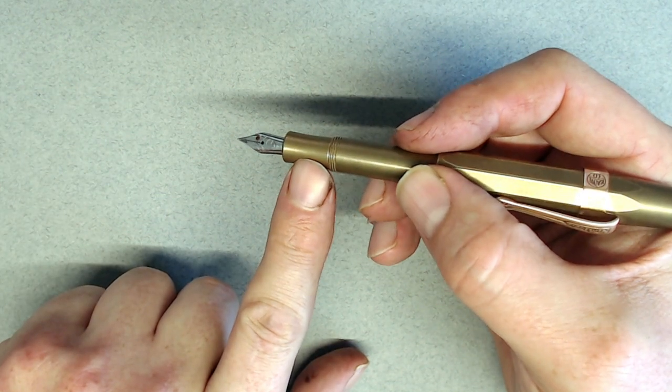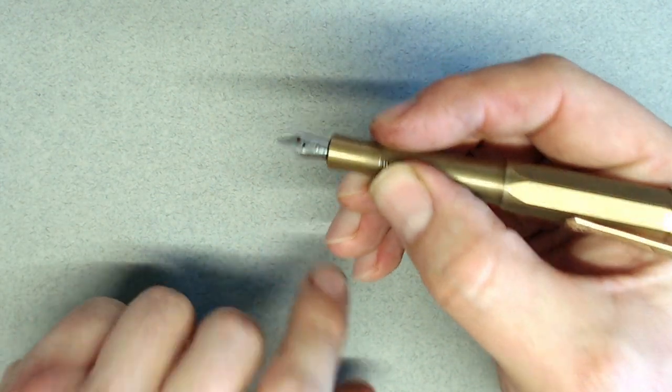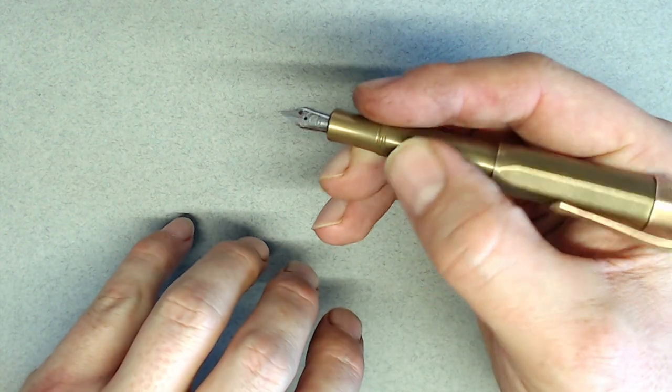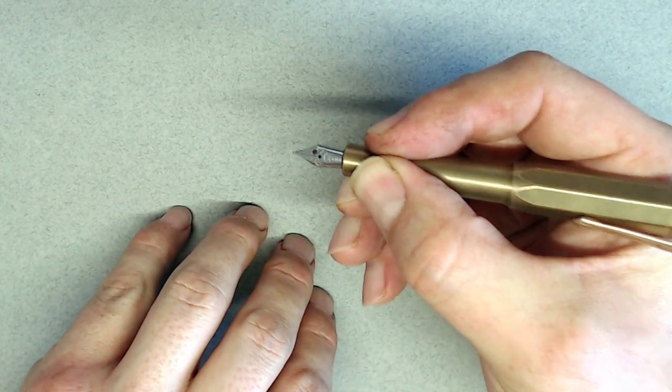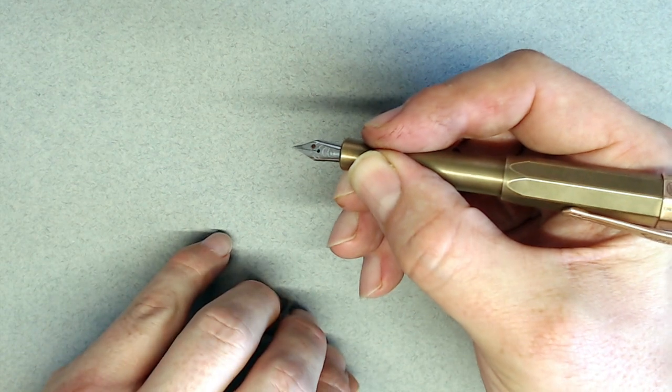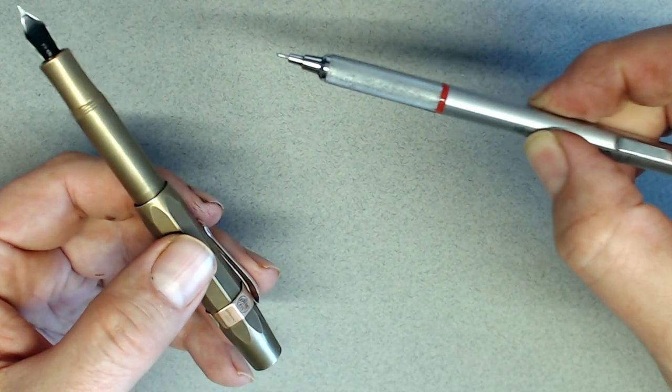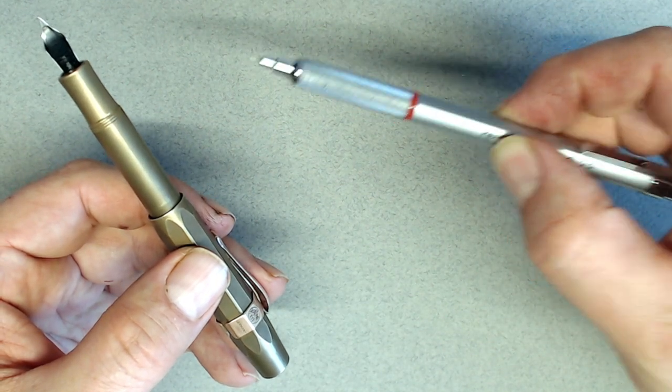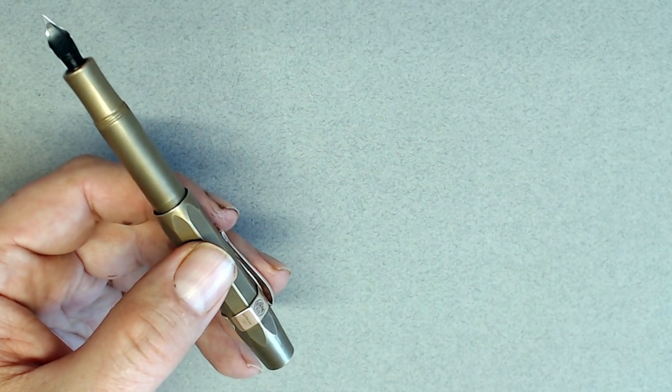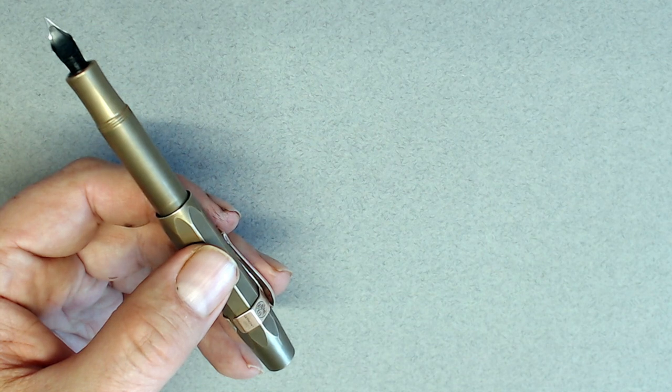The grip section is a touch small, which pushes your fingers onto the threads. But in this case, instead of being an irritant, it actually gives you a little bit more grip, which, given the weight, is welcome. I would love to see the addition of knurling on the grip section like there is on these Rotring pencils. Not only would it add more stability to the grip, but I think the additional contrast and texture would be a nice touch.